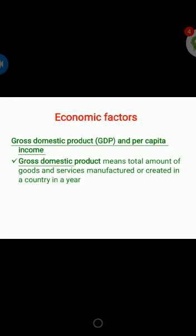In this class we are going to study about gross domestic product and per capita income. Gross domestic product is nothing but the total amount of goods and services that are manufactured or created in a country. How much goods and services we are going to produce in a country in a year — we call it gross domestic product. GDP considers the total goods and services manufactured in the nation in a year, which includes only the final goods and services.